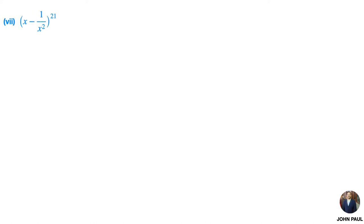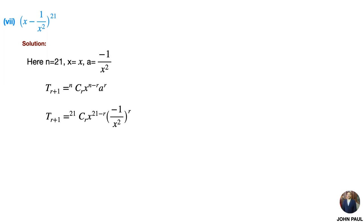Seventh problem: (x − 1/x²)²¹. Solution: here n = 21, x = x, and a = −1/x². Using the general term formula, substituting n, x, and a, then taking the power inside and grouping the x term, we get 21Cr · (−1)^r · x^(21−3r).